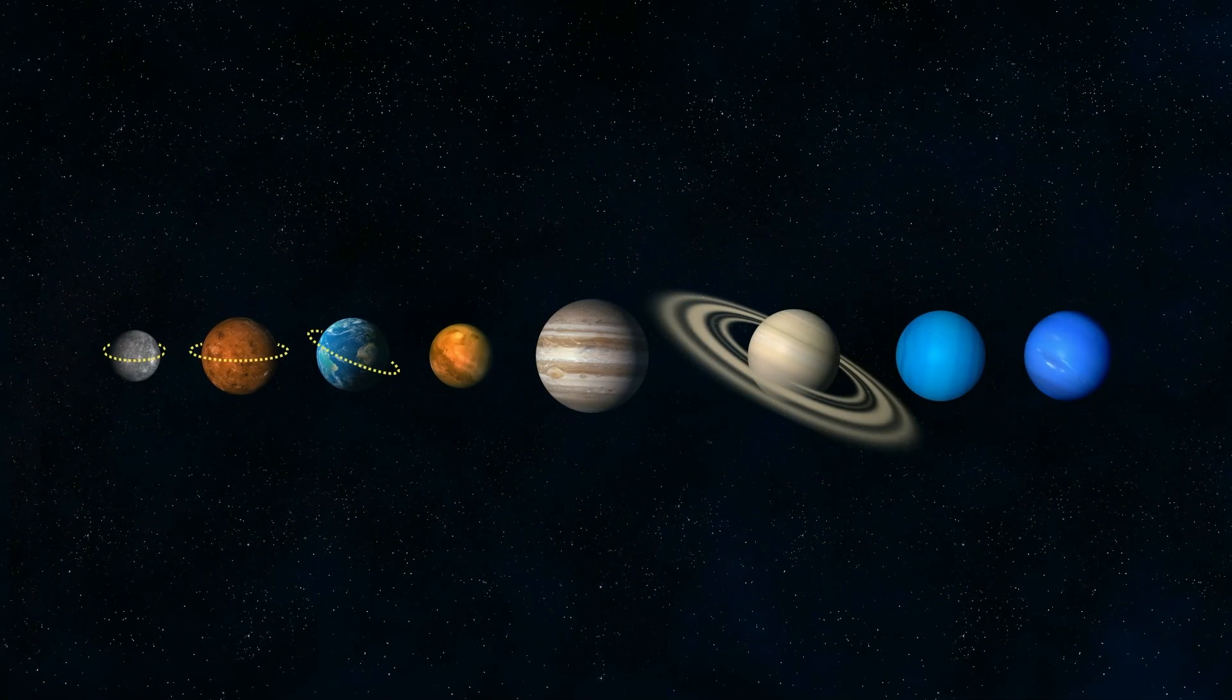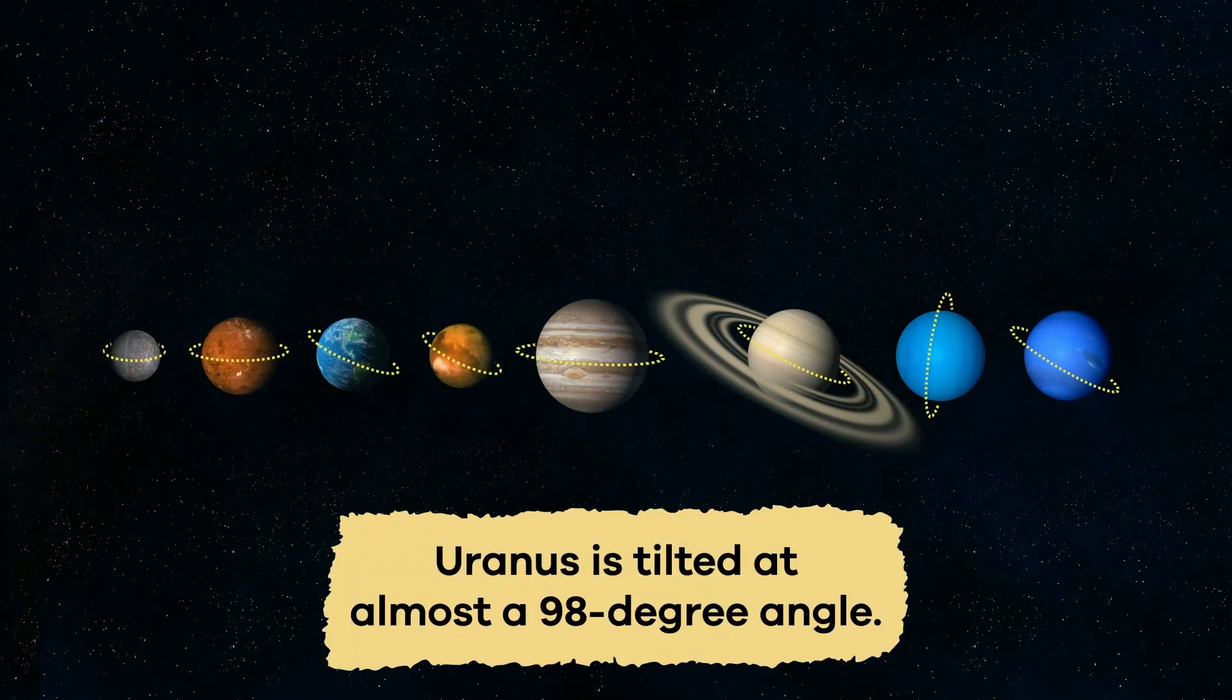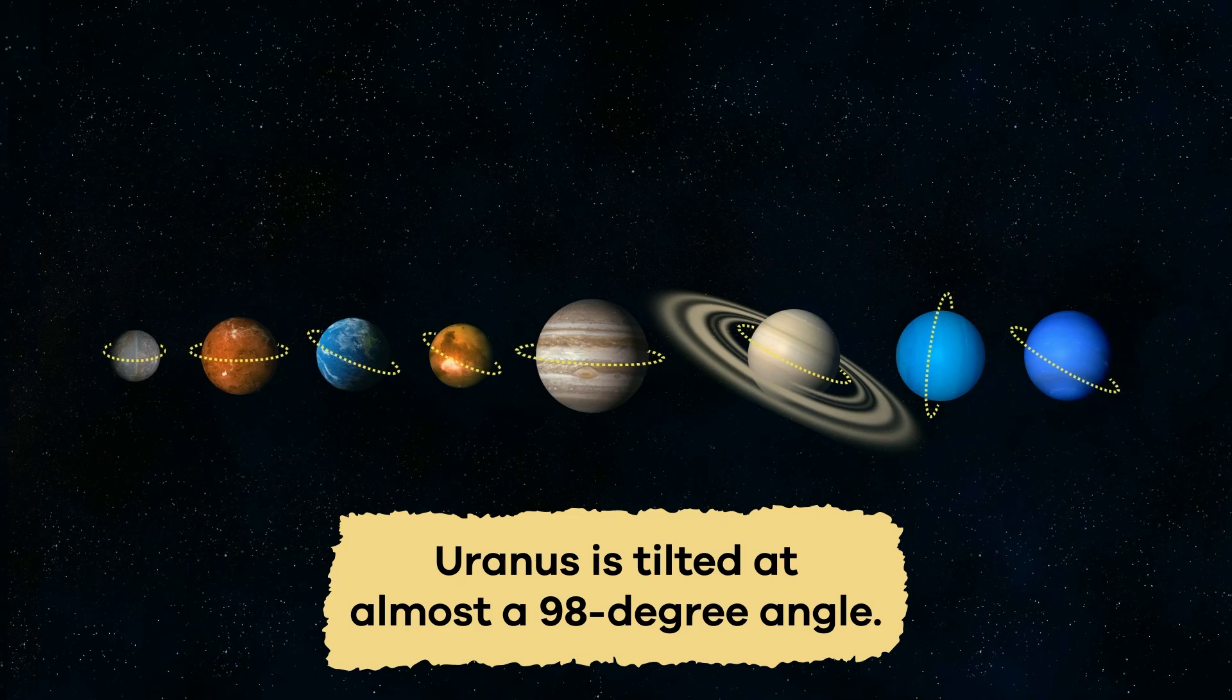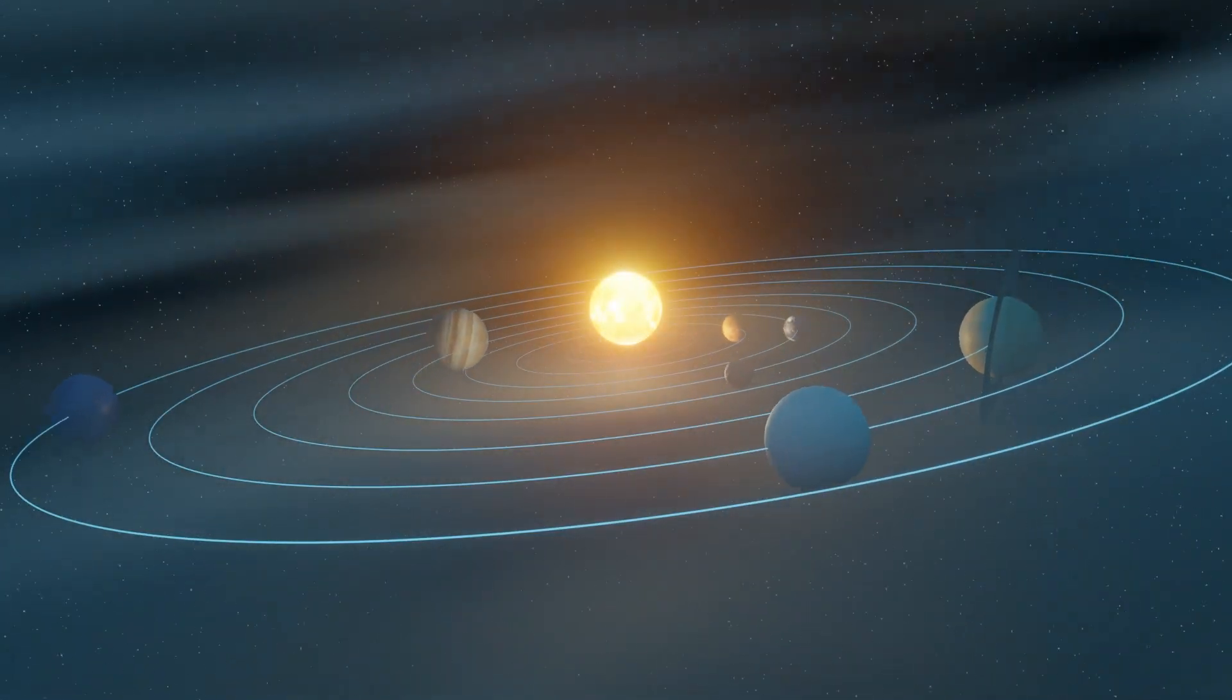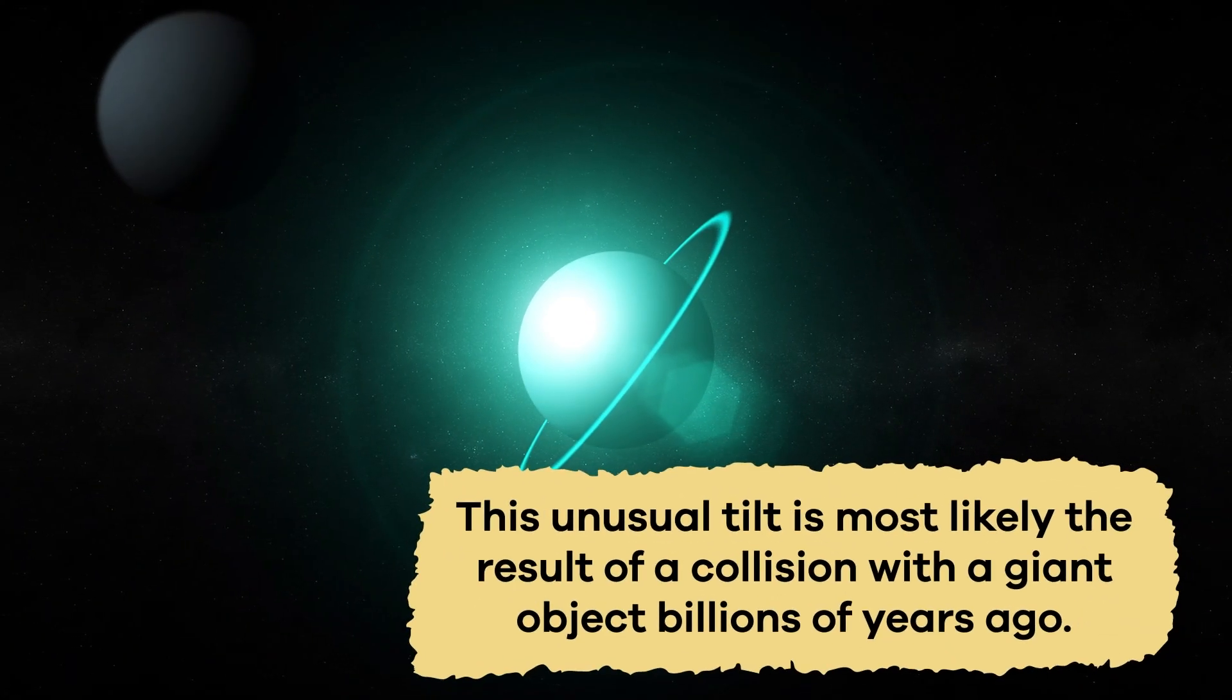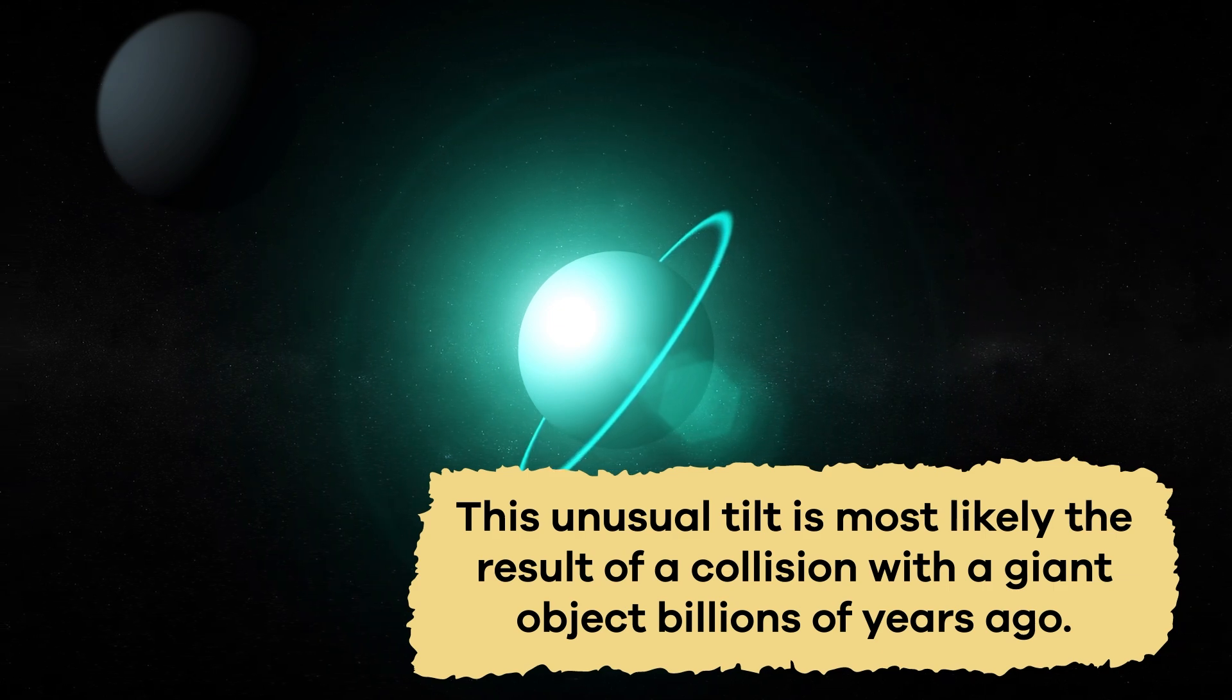Unlike the other planets in our solar system, which spin mostly upright, Uranus is tilted at almost a 98-degree angle. Its axis is so tilted, it rolls around the Sun on its side, kind of like a barrel. This unusual tilt is most likely the result of a collision with a giant object billions of years ago.